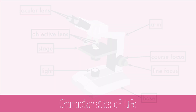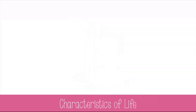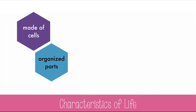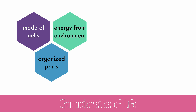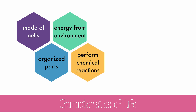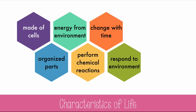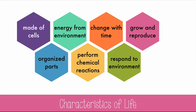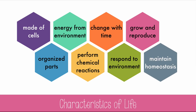The microscope helps scientists to define life and its characteristics. They decided that living things are all made of cells, they have organized parts, they obtain energy from their environment, they perform chemical reactions, they change with time, they respond to their environment, they grow and reproduce, and they maintain homeostasis, which is an internal balance. All of these are required characteristics for something to be classified as a living thing.